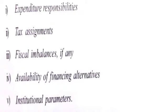One: expenditure responsibilities. Two: tax assignments. Three: fiscal imbalances, if any. Four: availability of financing alternatives. Five: institutional parameters.